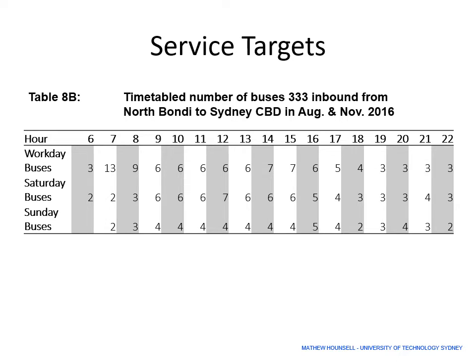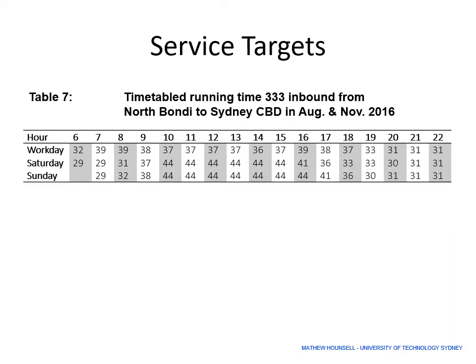The number of services was usually about one every 10 minutes, or six per hour, except for the morning weekday peak where up to 13 services ran — one every 5 minutes. In the evening it drops to one every 20 minutes, but that's still a good service. The expected running time ranged from 32 minutes in the morning to 39 minutes during the day, and 29 to 44 minutes in the evening — suggesting the operator knew services would be impacted by traffic and the prioritisation of private cars.